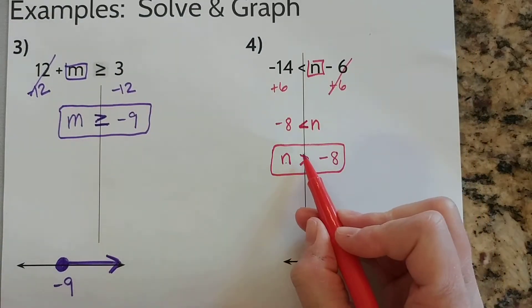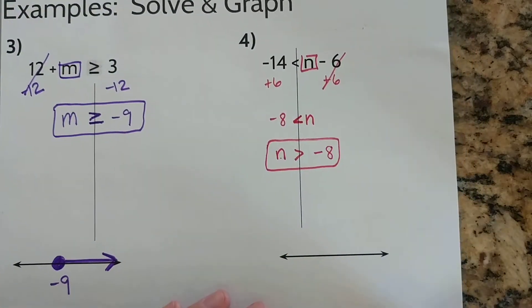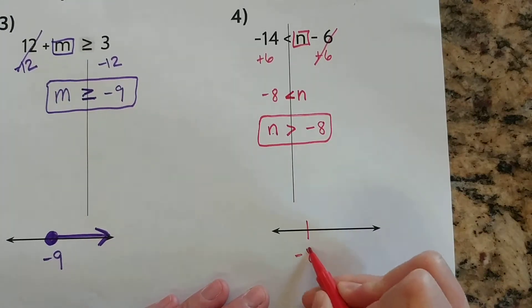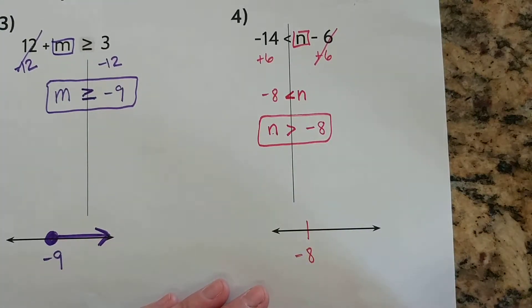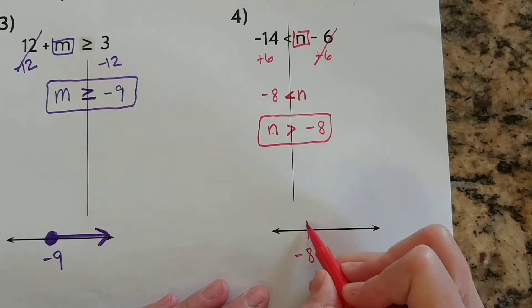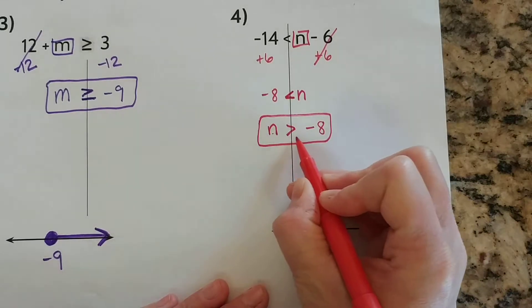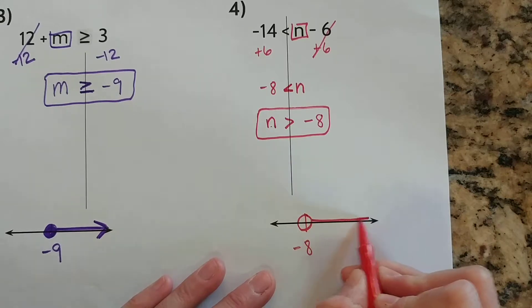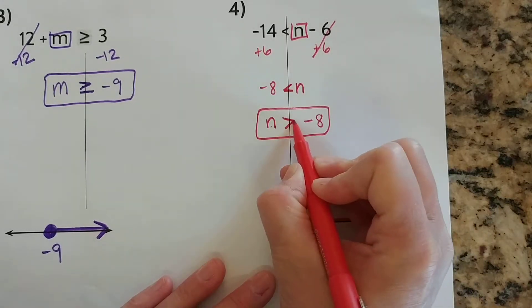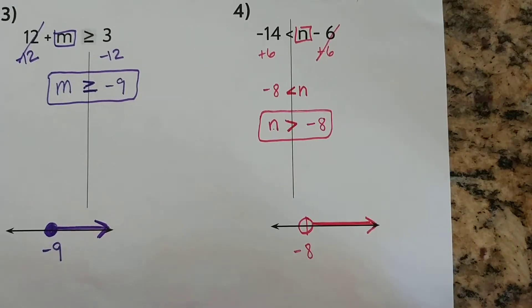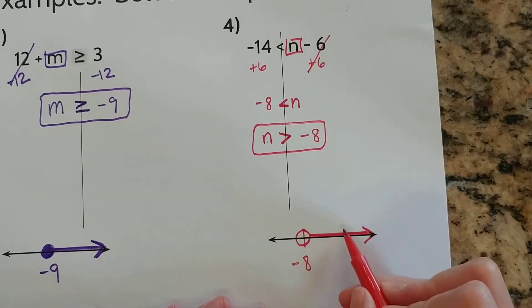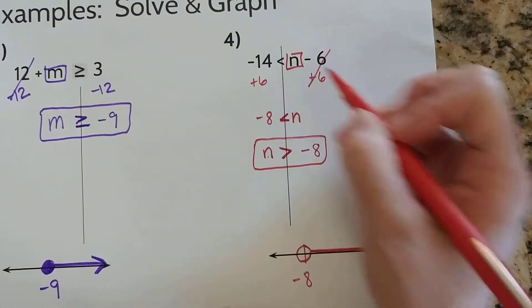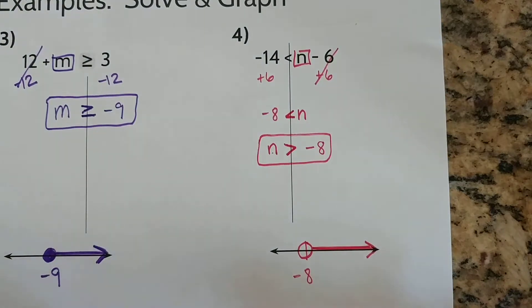So now I can put a circle around it. This is saying all numbers that are greater than negative 8 are solutions. Let's go down and graph it — we need a negative 8. Open circle, because there's no "equal to," so we're not going to include the negative 8, just everything greater than it, going to the right. I could take any of these numbers and plug them back in for N and they would be true.